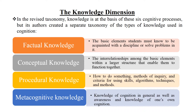In the revised taxonomy, knowledge is at the basis of these six cognitive processes, but its authors created a separate taxonomy of the types of knowledge used in cognition. There are four types of knowledge: factual knowledge, conceptual knowledge, procedural knowledge, and metacognitive knowledge. Factual knowledge is the basic elements students must know to be acquainted with a discipline or solve problems in it. Conceptual knowledge is the interrelationships among the basic elements within a larger structure that enable them to function together. Procedural knowledge is how to do something — methods of inquiry, and criteria for using skills, algorithms, techniques, and methods. Metacognitive knowledge is knowledge of cognition in general as well as awareness and knowledge of one's own cognition.